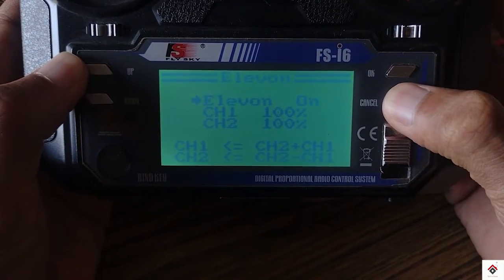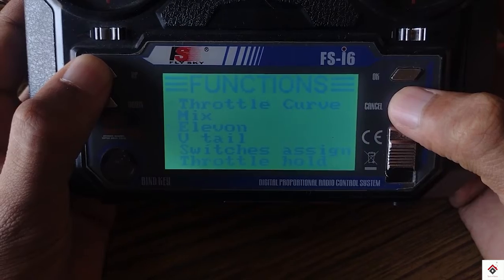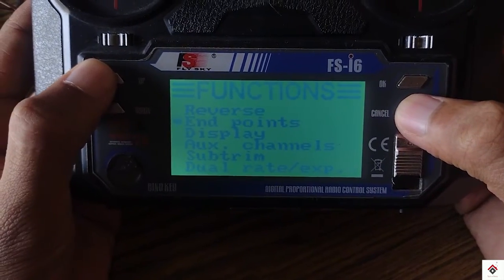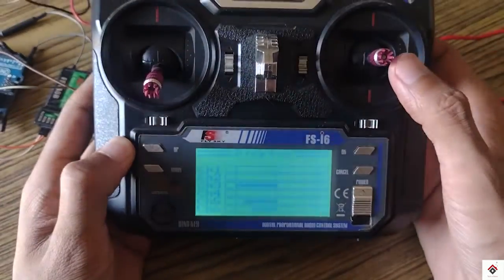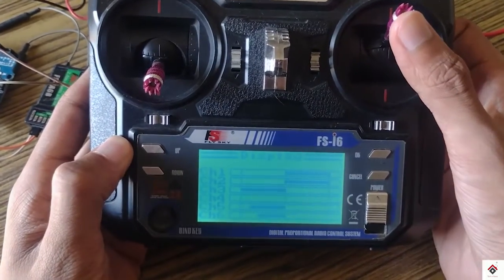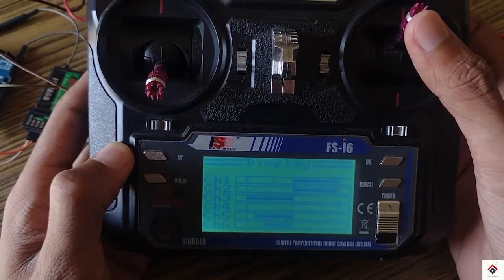Hold cancel button for few seconds to save. So in the display you can see channel 1 and 2 are mixed, which will be very useful for robotic movements.